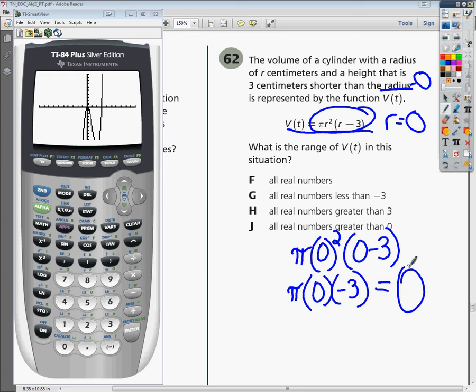So that tells us that it must be, everything must be bigger than zero. So we're looking at all real numbers greater than zero. So like I said on this problem, it doesn't make a whole lot of sense in real life,